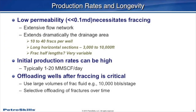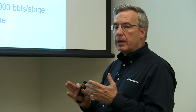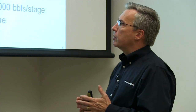Even though it's very low permeability, the production rates can be quite high. But because of the low perm, we have to frack these — we frack them hard. Typically 10 to 40 fracks per lateral, and the laterals are typically 3,000 to 10,000 feet long. The frack half-lengths vary significantly but generally are in the hundreds of feet.